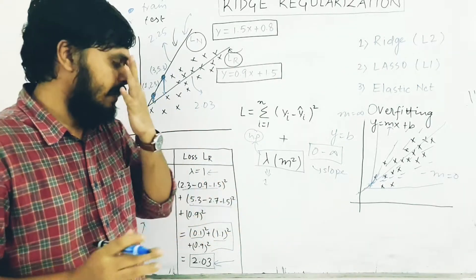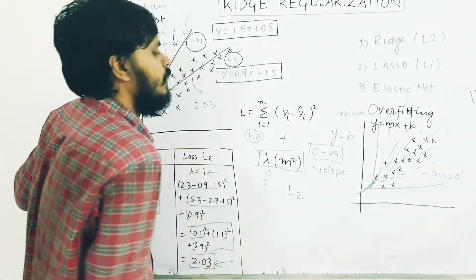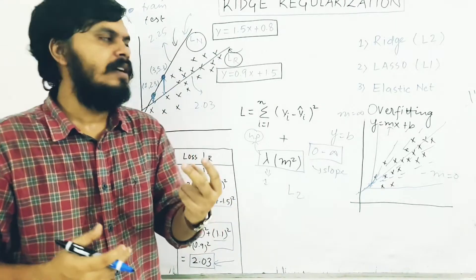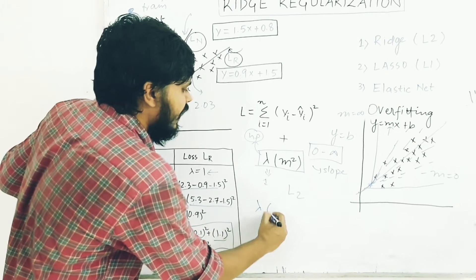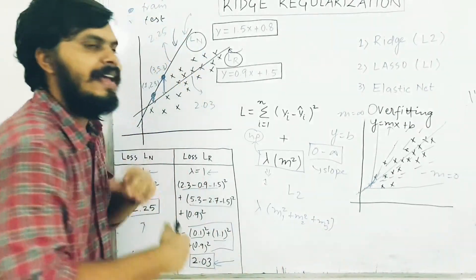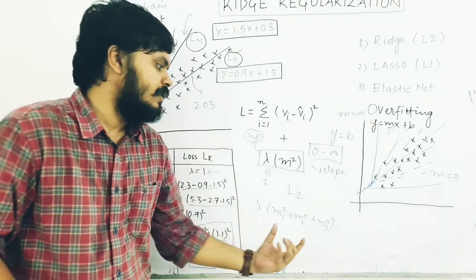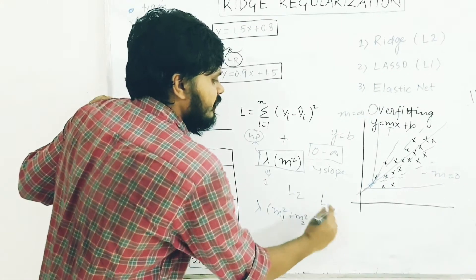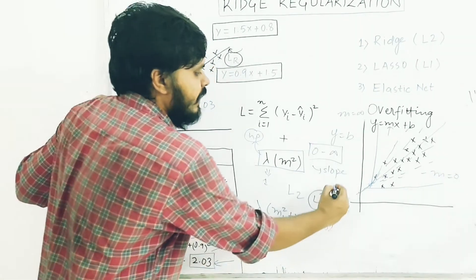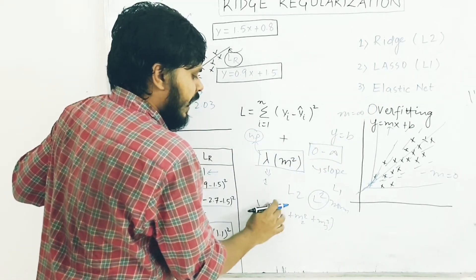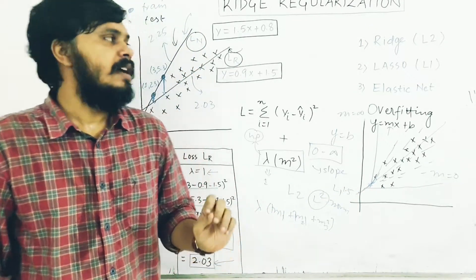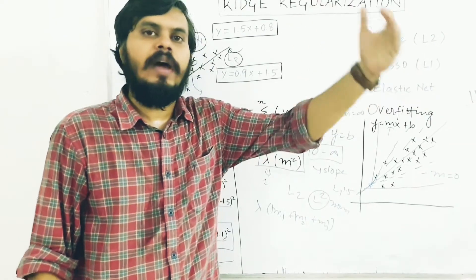Two things worth discussing: first, why do we call it L2 regularization? Because if you have two input columns, the regularization term becomes lambda times m1 squared plus m2 squared, and for three columns you add m3 squared. Basically every coefficient gets squared — this is the L2 norm. Similarly, there is L1 regularization which uses the absolute value instead of squaring. There are also 1.5-norm or 2.5-norm variants, but the most famous are L2 and L1.